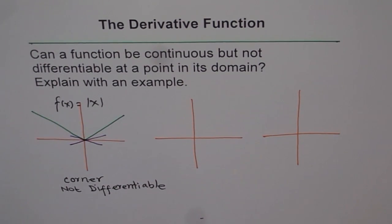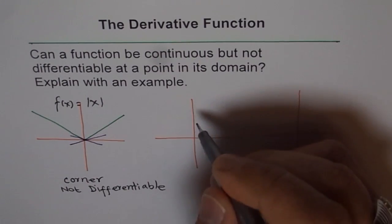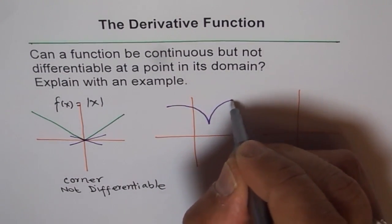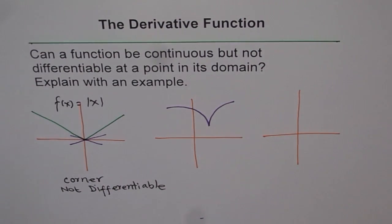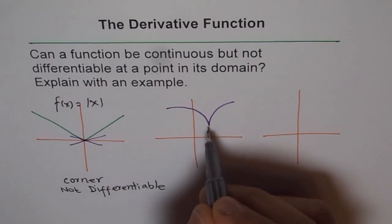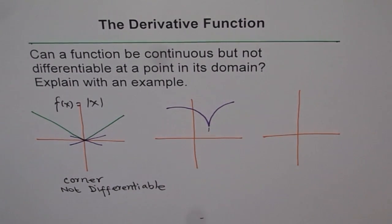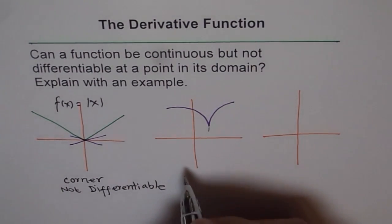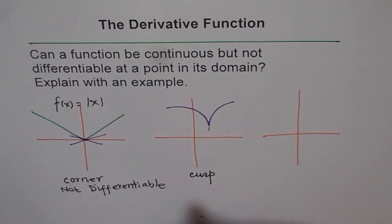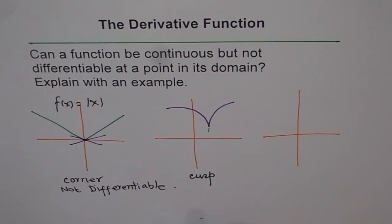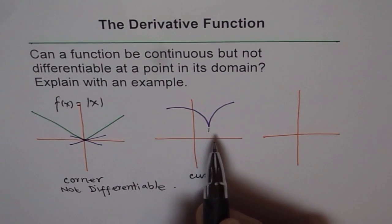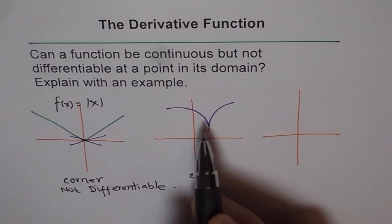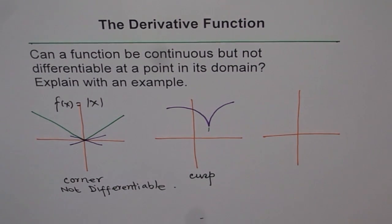Let me give you one more example where it is not differentiable. Let's say a function is kind of like this. Here you will figure out that if you consider this point, the function is not differentiable — that is a cusp. So at a cusp also, the function is not differentiable. Examples will be radical roots; those functions have a cusp and are not differentiable. The function is continuous — there is no break in the function — but it is not differentiable.